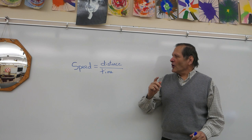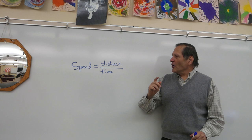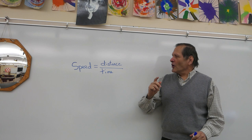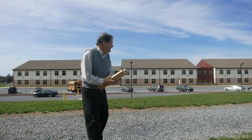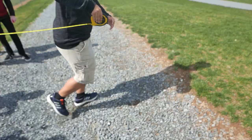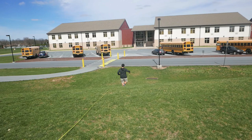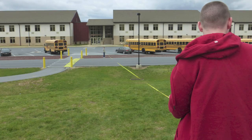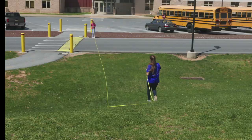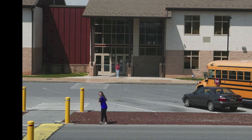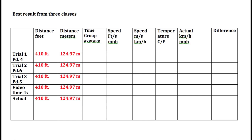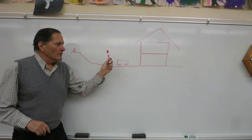For our calculations, we're going to start with the equation that says speed is equal to distance divided by time. Our distance is from here to the building. We have a 100-foot tape measure. We'll measure it in feet and we can convert that to meters. After measuring, we multiply the distance by two.